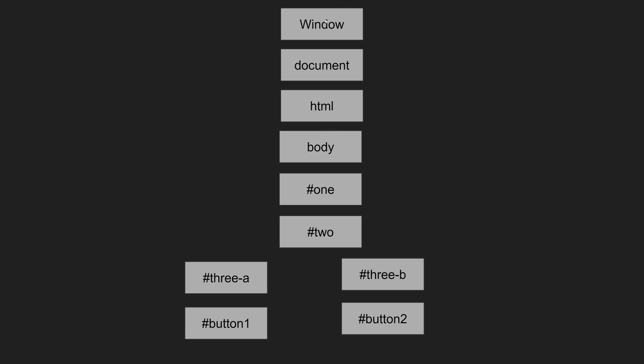The event bubbles to the top of the document, which is the window. So to summarize: whenever an event is fired, it goes through two phases — capturing and bubbling. In the capturing phase, it traverses from window down through the document nodes to find the target element. Once the element is found and capturing is complete, it bubbles back up to the top of the document.